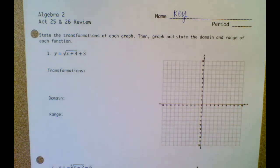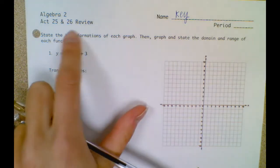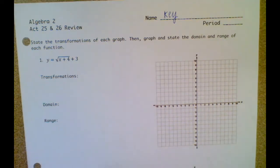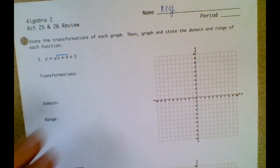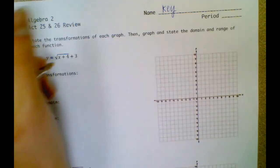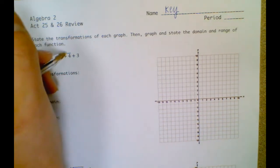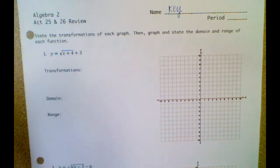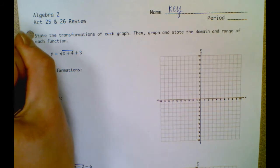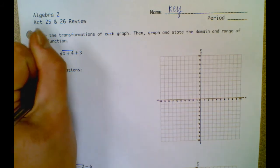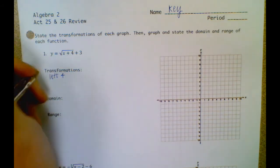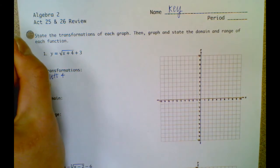Alrighty, number one says to state the transformations of each graph, then graph and state the domain and range of each function. So the transformations: this four is under the radical, so it's going to move left or right, and because it's a plus, it's going to move to the left. And this plus three on the outside of the radical means up three.